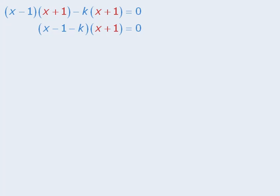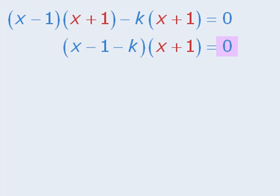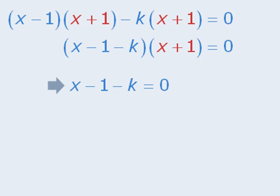Now from here, please notice that we have something times something equals zero. This means that either the first something equals zero or the second something equals zero.